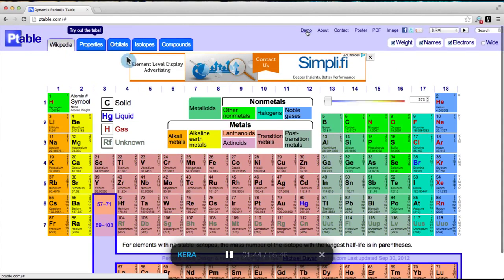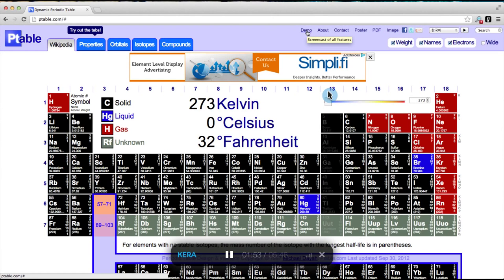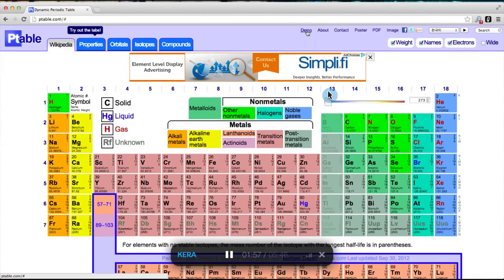A multipurpose slider is just above the nonmetals. In the first tab, it defaults to 273 Kelvin, the equivalent of 0 degrees Celsius. Element symbols are colored black if that element is solid at the selected temperature, blue if it is a liquid, and red if it is a gas.